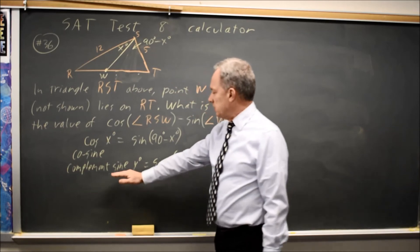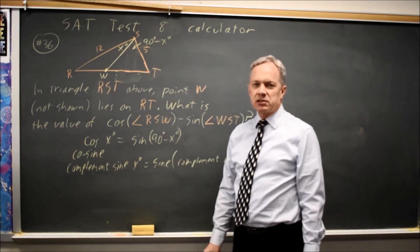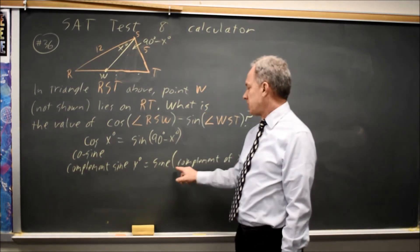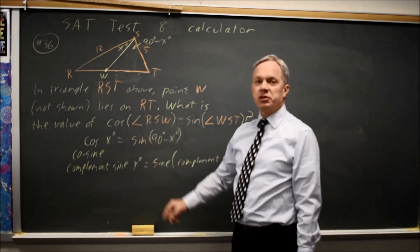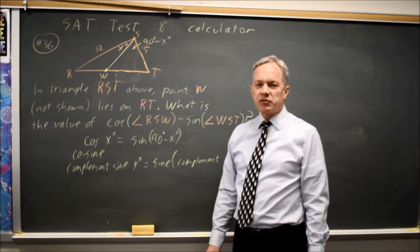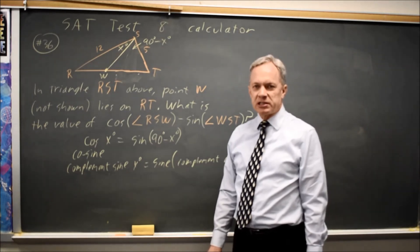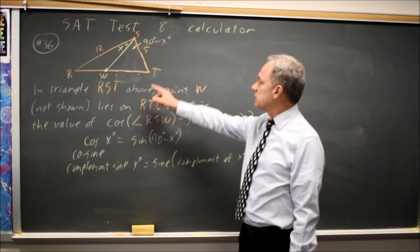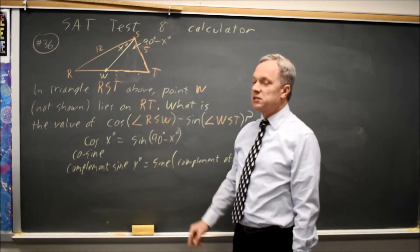So if you know the word origin for cosine is the complement sine, in other words, the sine of the complement, this should be true by definition from the word origin, or by definition from the formula we saw in our geometry class. In any case, the difference between these two functions is 0.